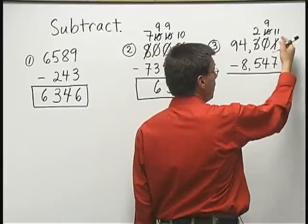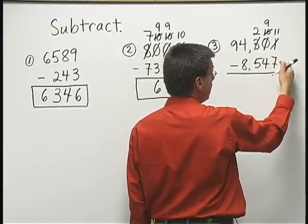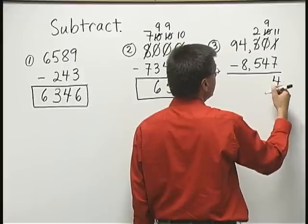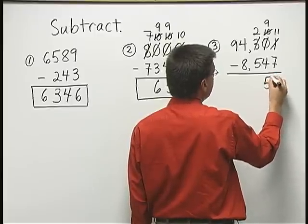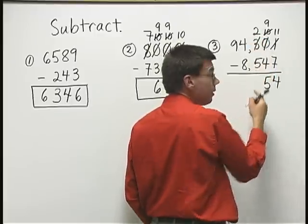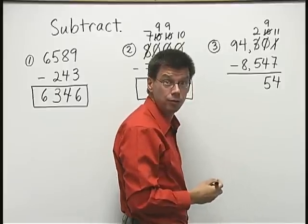Now, we can begin the subtraction process. Eleven, take away seven, is four. Nine, take away four, is five. But two, take away five, I can't do. So, I need to borrow again here.